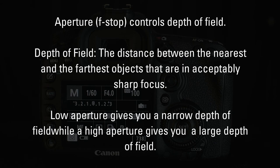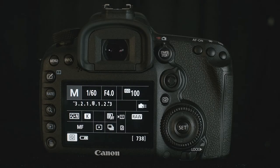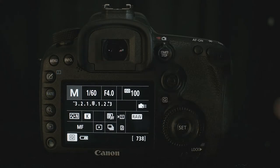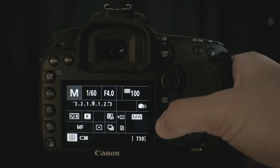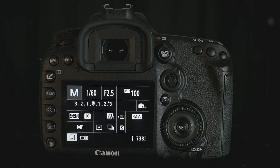Aperture is what lets you control the depth of your photos and how much of your photo is sharp and in focus. You can control your aperture by using the aperture dial on the back of your camera or by using the back menu interface.